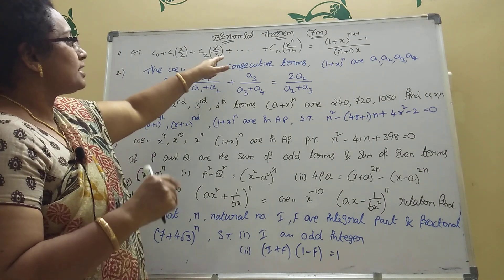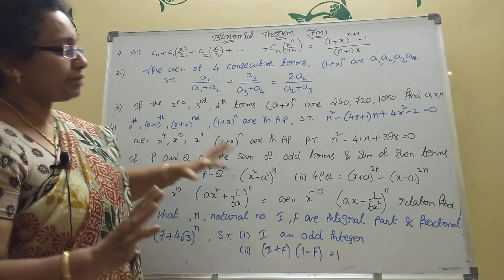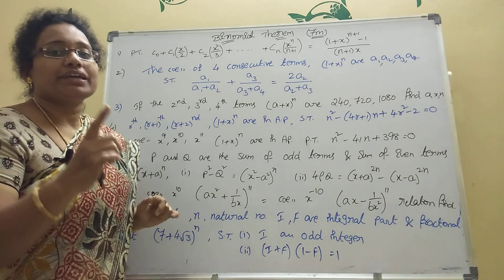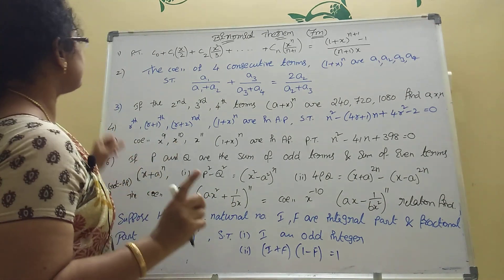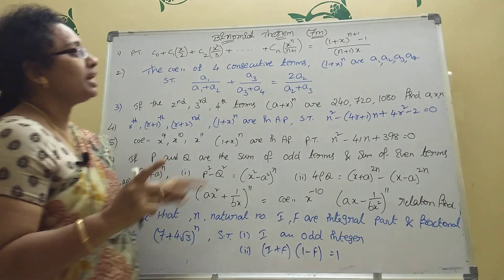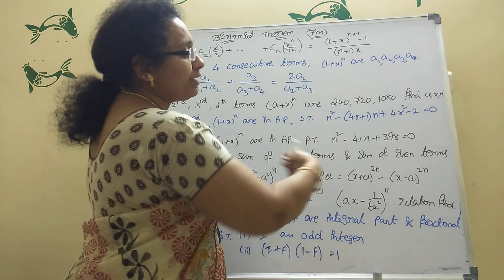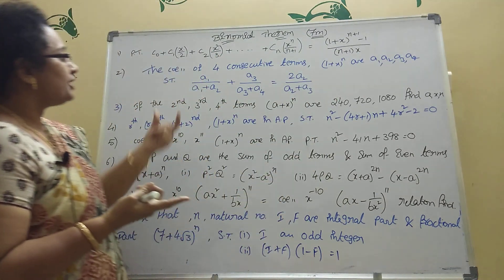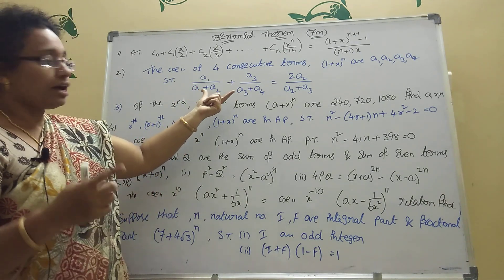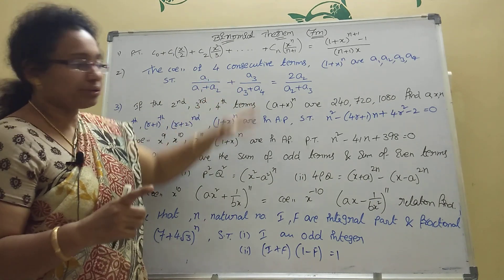This is the important model — there is another theorem also, but that is not as important. I am explaining the definite important problems, the 'damn sure' problems. I have written them up here — that is what you should prepare; you will get one seven-mark question from it. Next: if the coefficients of four consecutive terms in the expansion of (1+x)ⁿ are a₁, a₂, a₃, a₄, then prove the given relation. I already explained this yesterday and uploaded the answer — it is a damn sure problem.